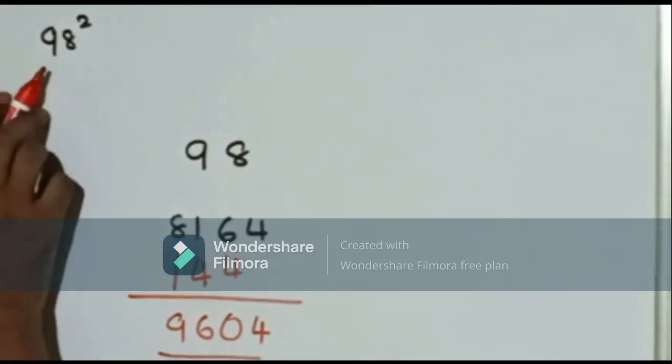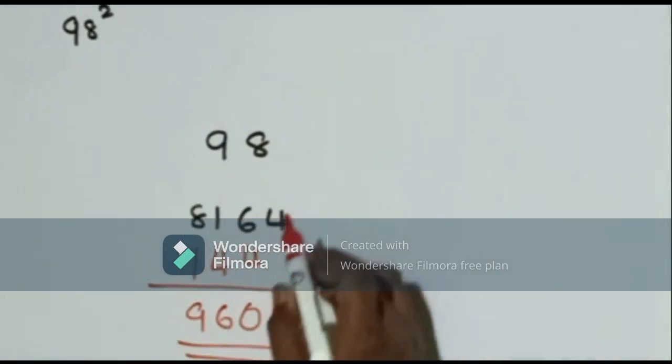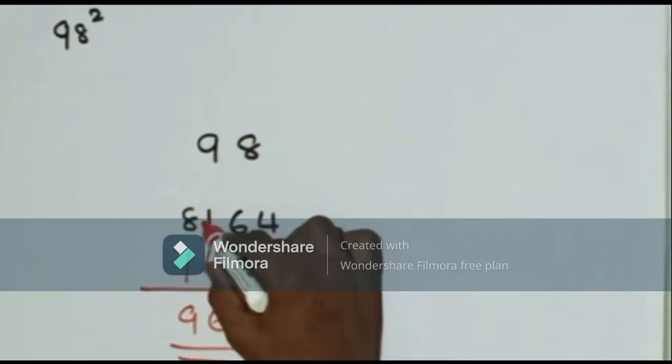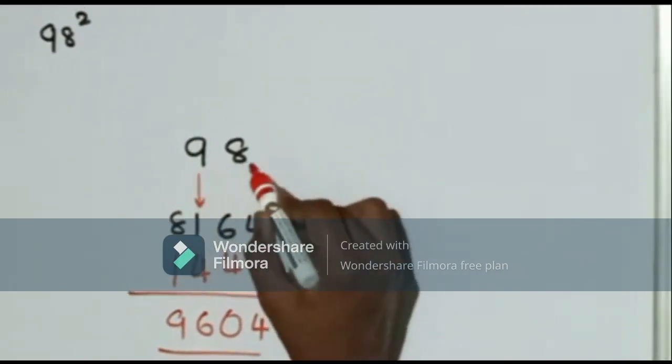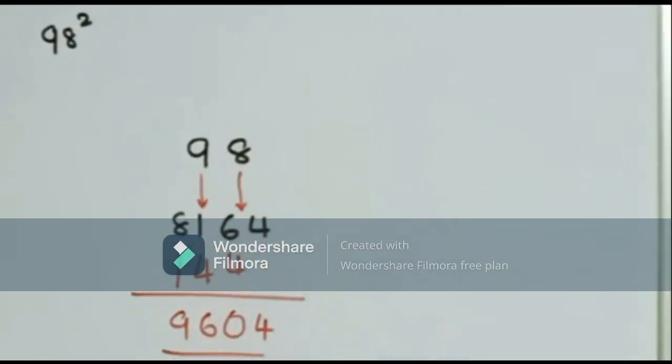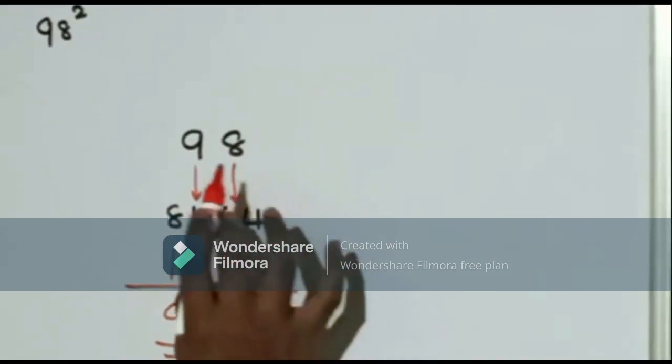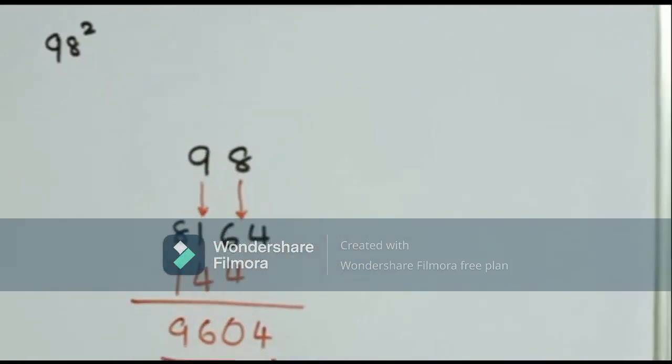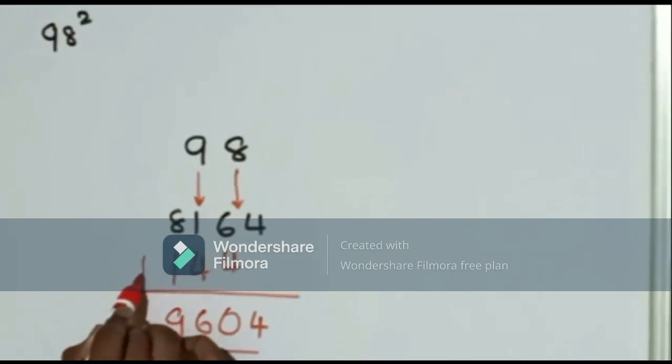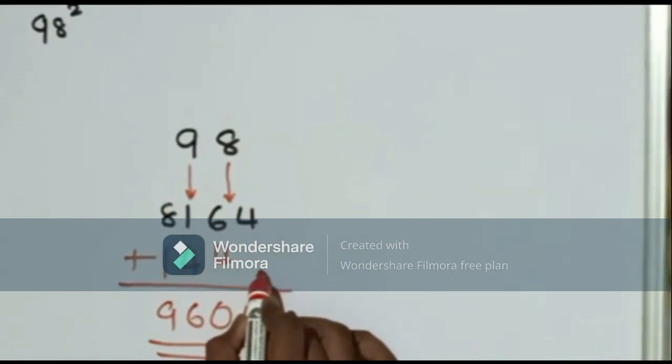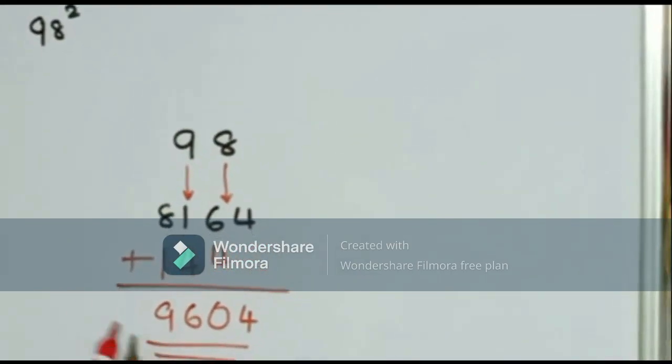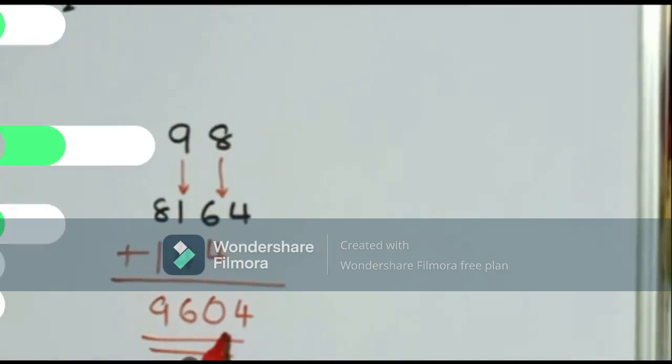In the second step, we need to find the square of 9, which is 81 and the square of 8, which is 64. Now, we multiply the product of these 2 numbers by 2, we get 144. Now, we add these 2 numbers and we get the square of 98, which is 9604.